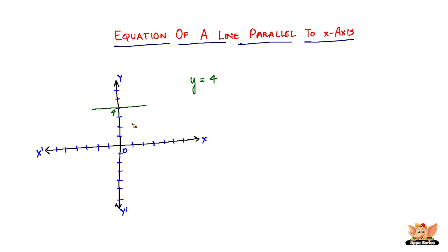If it were not parallel to the x-axis, it would be a different case. But since all the points of this line are the same distance from the x-axis, it really doesn't matter what the length of this line is. To get the equation of this line, we just have to find that one point on the y-axis, and then we can extend it on either side to make it a line.